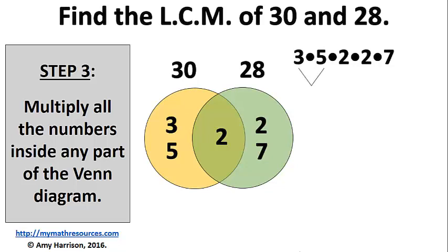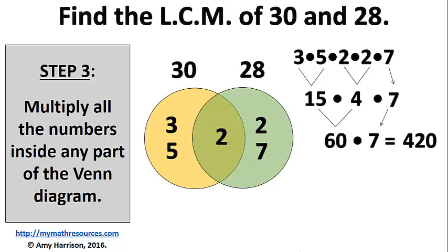3 times 5 is 15. 2 times 2 is 4. Bring down the 7. 15 times 4 is 60. And 60 times 7 is 420. So, the least common multiple of 30 and 28 is 420.